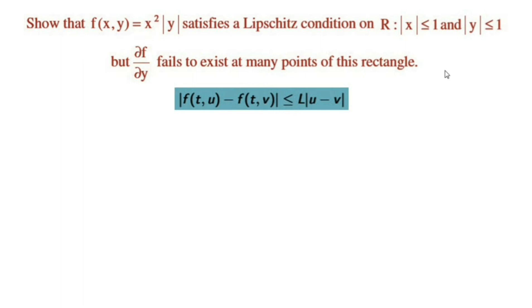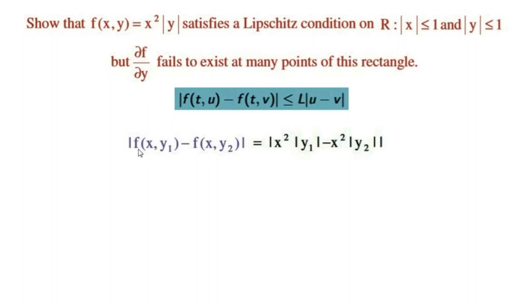Based on this condition, first of all we define the rectangle region R as |x| ≤ 1 and |y| ≤ 1. Let us consider |f(x, y₁) - f(x, y₂)|. Since f(x, y) = x²|y|, this becomes |x²|y₁| - x²|y₂||.